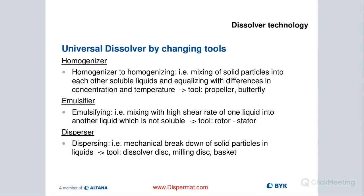The viscosity needs to be really low for the rotor stator to be effective. These are all out-of-the-box dispersers with the capability of using the dissolver with the cowl's blade. Most of them ship with a number of different blade diameters. You could convert them to a basket mill with the quick change system, or add a milling disc and use it as a vertical bead mill with our APS (air pressure system).